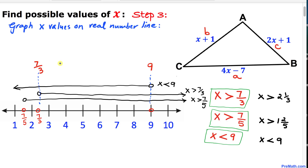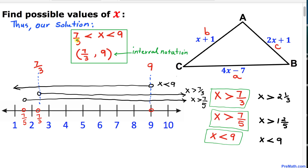So our possible x values lie between 7 thirds and 9. That is our final solution. Thanks for watching, and please don't forget to subscribe to my channel for more exciting videos. Bye!